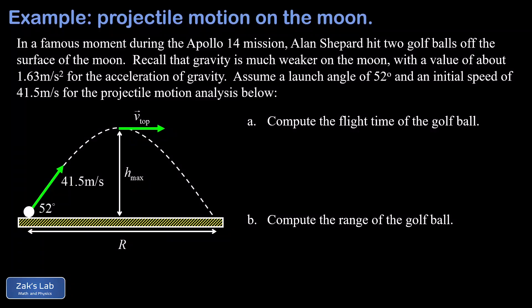In a famous moment during the Apollo 14 mission, an astronaut named Alan Shepard hit two golf balls off the surface of the moon. In this video, we're going to do a projectile motion analysis for a golf ball hit on the moon, and we're expecting this thing to go pretty far because gravity is so much weaker on the moon. In fact, g on the moon is about one-sixth g on the earth, or about 1.63 meters per second squared.